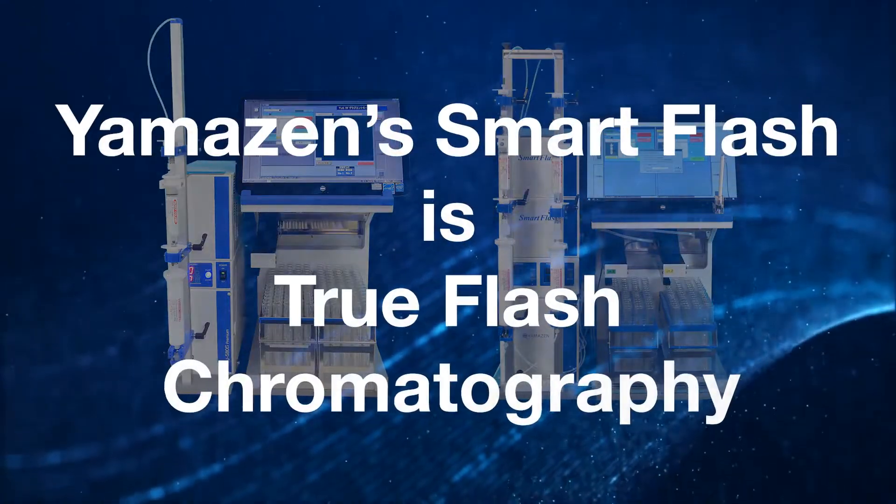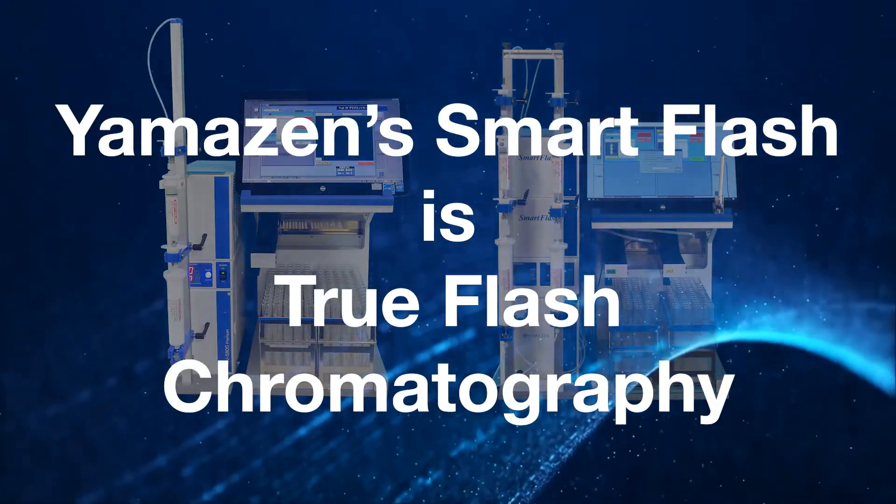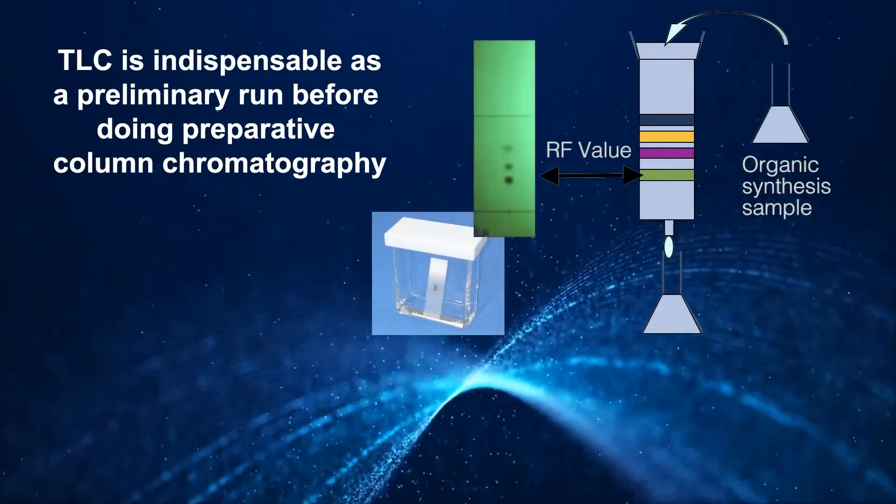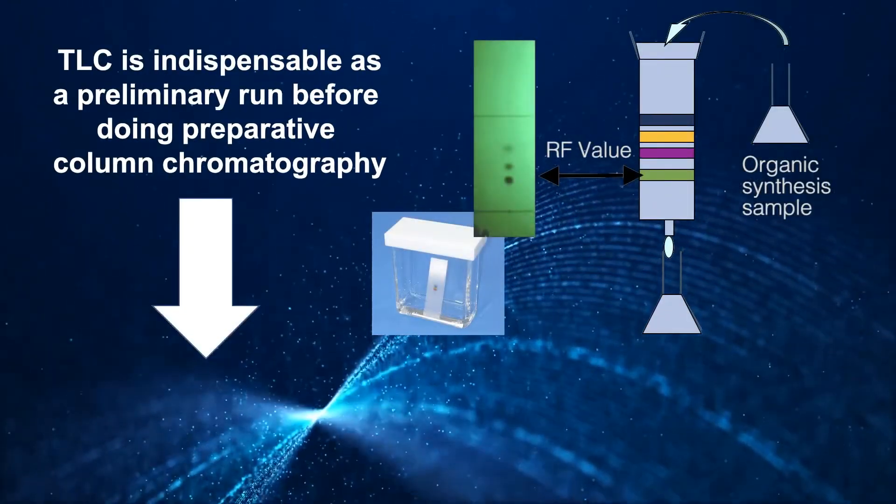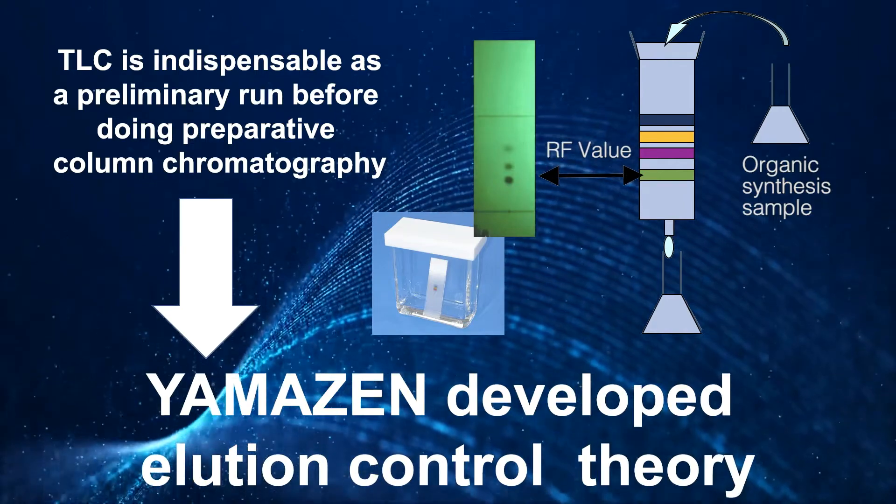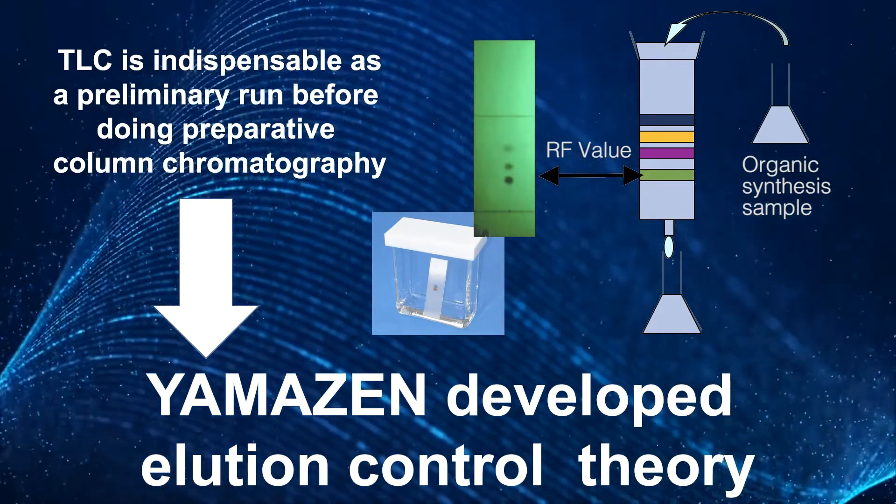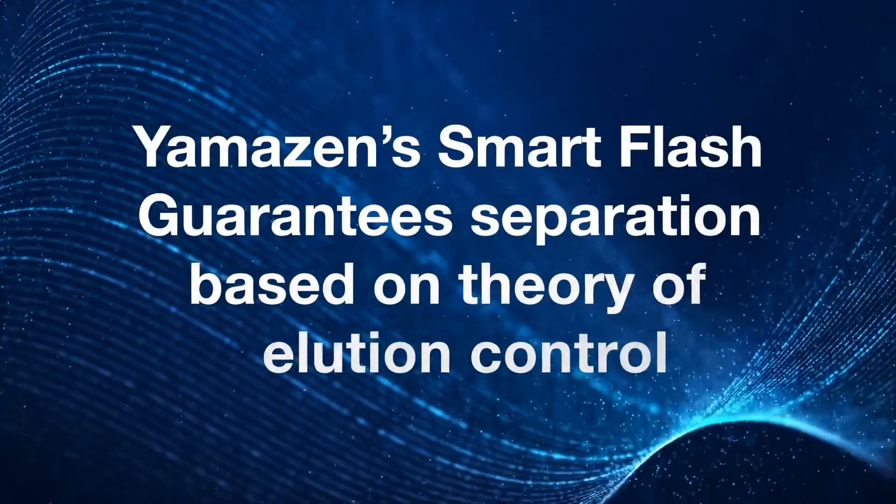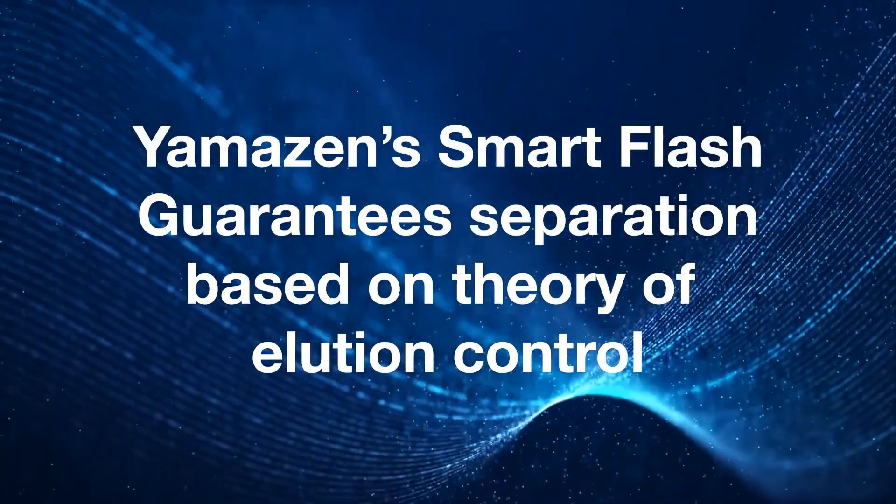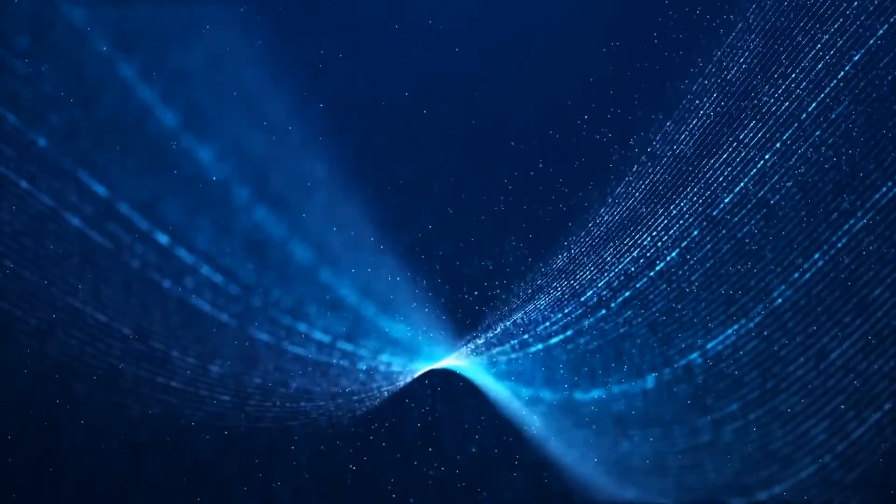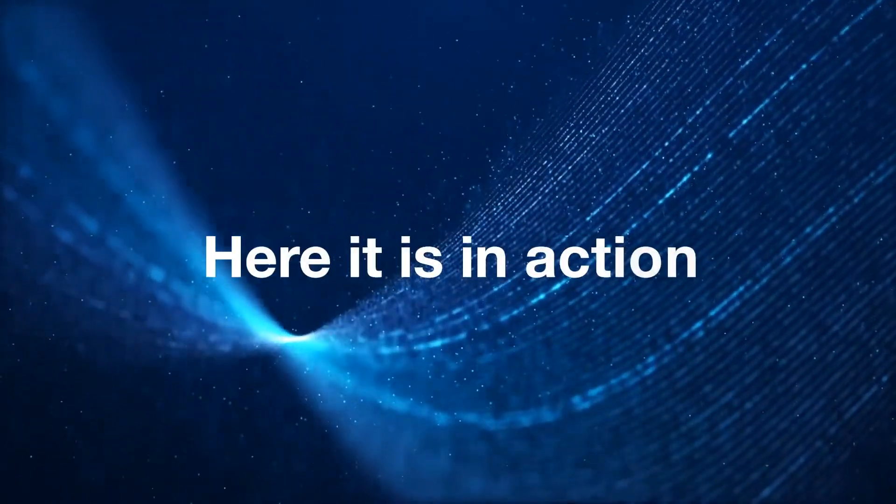Yamazon's Smart Flash systems are the only ones capable of performing true flash chromatography. Using the RF value obtained from TLC, chemists can control the target elution position. Yamazon took advantage of this to develop the elution control theory, even allowing us to control target elution position with the gradient method.